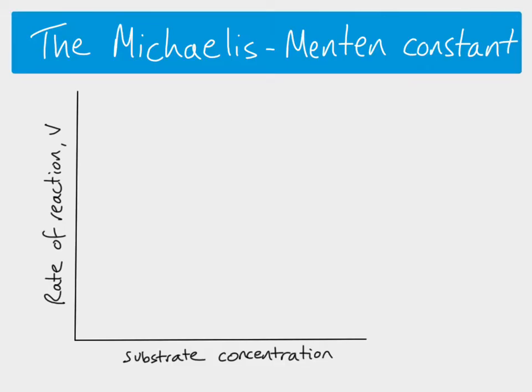If we have a substrate concentration of zero, then of course there's going to be no reaction. You can't have a reaction if there's no substrate. If we then increase the substrate concentration, we will see an increase in the rate of reaction, and to begin with, this increase is going to be steep.